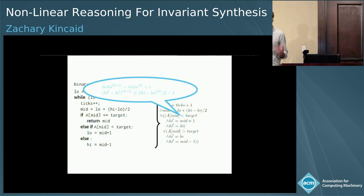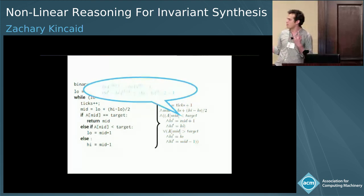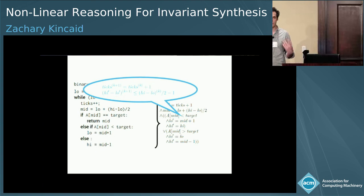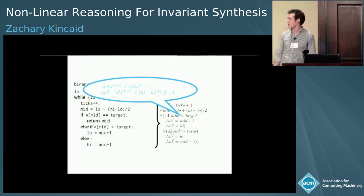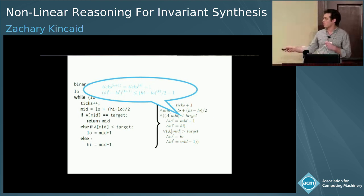Recurrence relations don't completely describe the dynamics of this loop — they just approximate them. I can't compute a recurrence for low or high because they behave unpredictably, but the difference is something I can predict: it always decreases by half at every loop iteration. The trick is how I go from the formula to this system of recurrences.